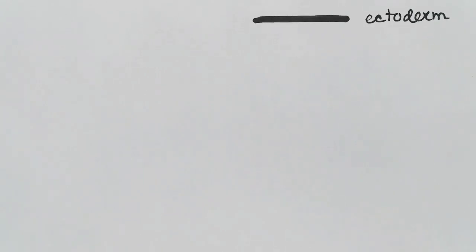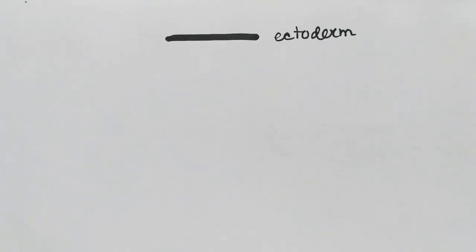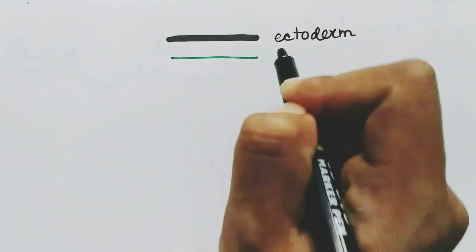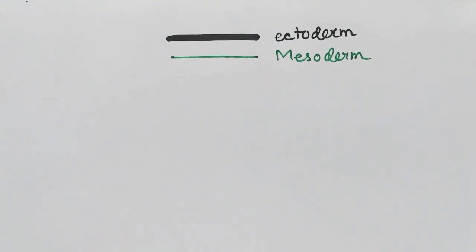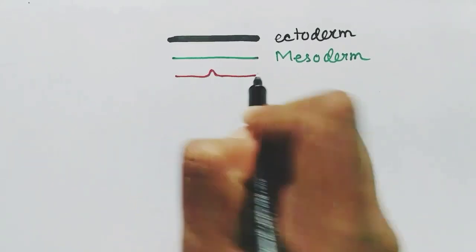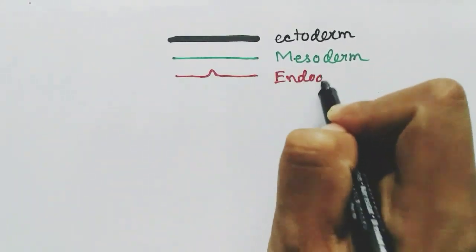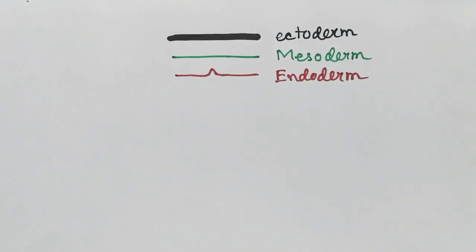Today we are talking about extra-embryonic membranes. The three germ layers — the ectoderm, mesoderm, and endoderm — will form the extra-embryonic membranes and the embryo.